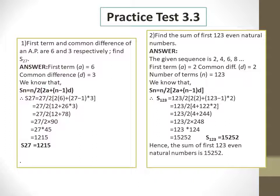S_27 equals 27 upon 2 into bracket 2 into 6 plus 27 minus 1 into 3. Solving the bracket: 2 times 6 is 12, plus 26 multiplied by 3 is 78, giving 12 plus 78 equals 90. Then 27 upon 2 multiplied by 90 — dividing 90 by 2 gives 45, then 27 multiplied by 45 equals 1215. Therefore, the sum of 27 terms of this AP is 1215.